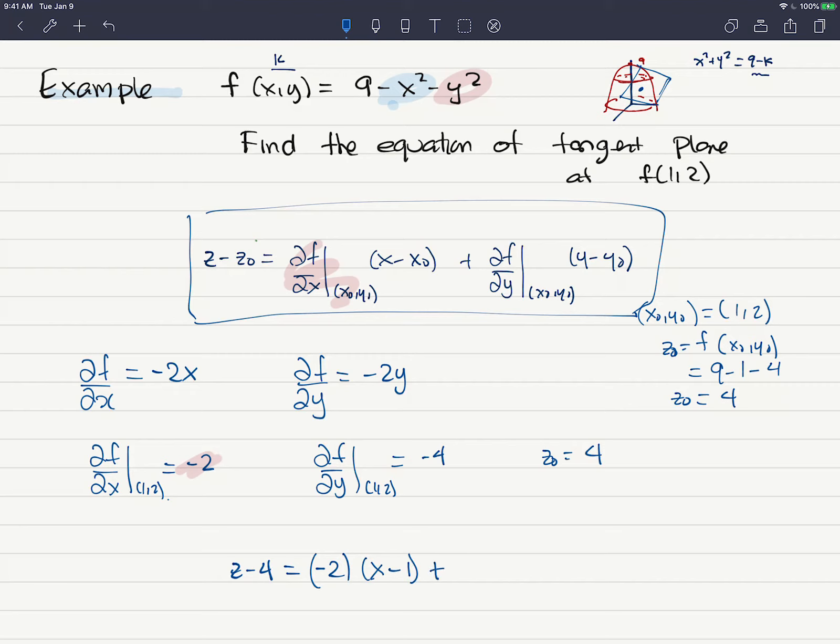Then plus the partial derivative of f with respect to y. So that is this one, which is this one, evaluated at the point. So this is negative 4. I'm going to put a parenthesis times y minus 2. And that's it, right?